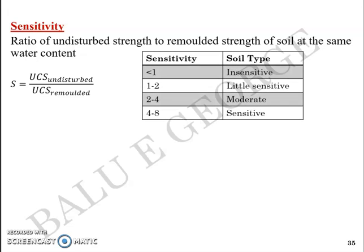Based on the value of sensitivity S, you can classify soil to be insensitive or little sensitive, moderately sensitive, or sensitive. Looking at this table, you can see that sensitive soils have sensitivity value between 4 and 8, whereas for insensitive soil, it falls in the range of 1. The soils which get considerable reduction in strength on remolding are sensitive, whereas those which don't show reduced strength are insensitive, and it indicates the weakening of soil due to remolding.